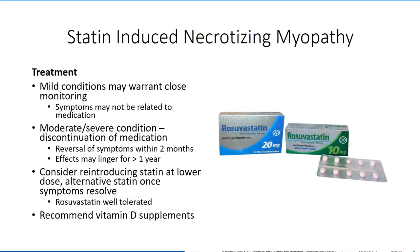For milder symptoms, no adjustments may be necessary — the cramping may be incidental or not so serious as to justify altering the dosage. With moderate to severe symptoms, the recommendation is typically to discontinue the medication and monitor the patient. Symptoms typically fade within two months of withdrawal of medication, although in some rare cases, patients can remain symptomatic for a year or longer. Once the symptoms fade and the patient appears back to normal, the physician should consider reintroducing the medication or switching to a different statin prescription.